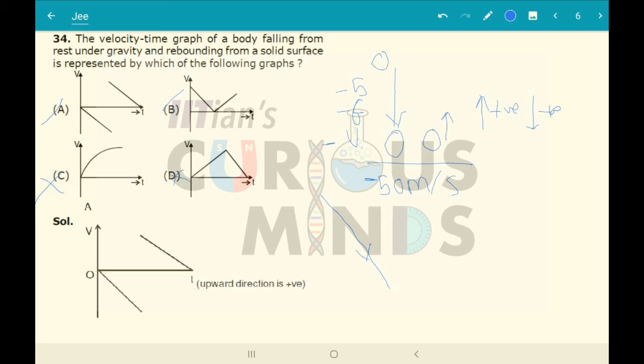The velocity will be 50 meters per second, but it will be positive. Then it will become 0. This positive part will eventually become 0, so the answer is option number A.